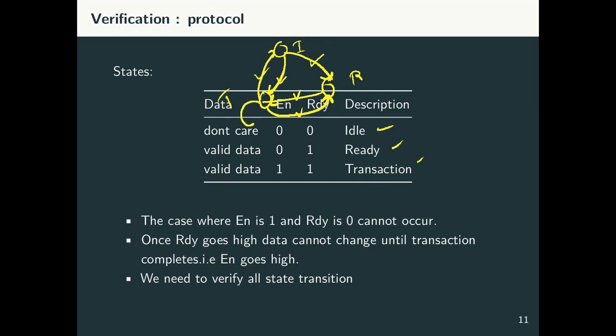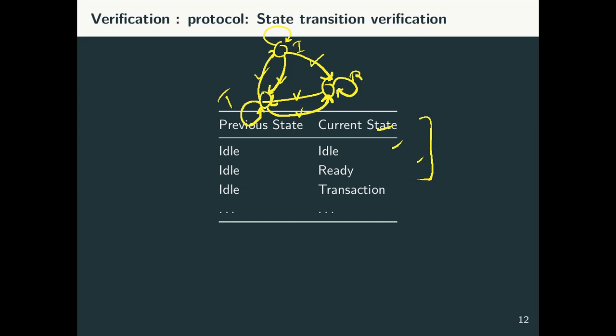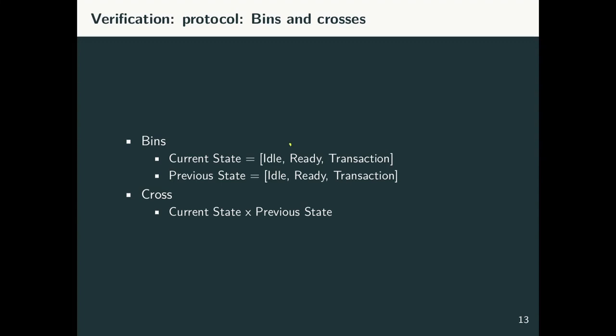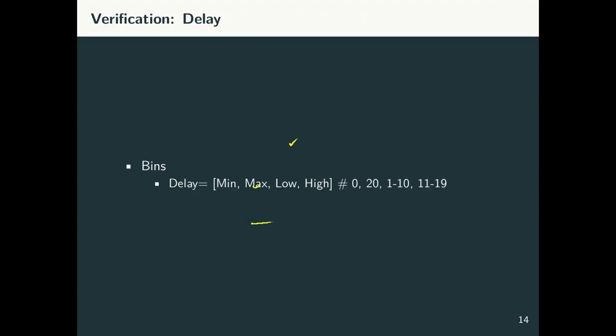We also have a path from here to here. These are the various transitions which are possible. And as a part of our verification process, we need to ensure that we are hitting each one of these paths. The way we define this is we define, in this particular case, we define a previous state value and the current state value, and we ensure that we have a cross between current and previous state. And the final thing is that we specified that we have a delay between 0 to 20 at producers and consumers. We will have a bin to check whether we are hitting all the delay corners in our test case.